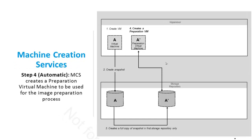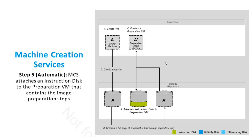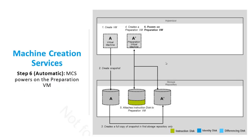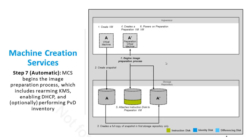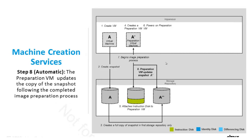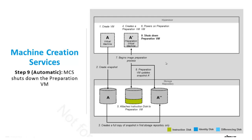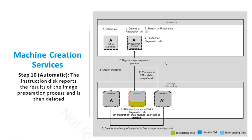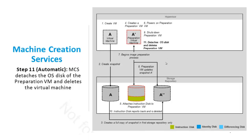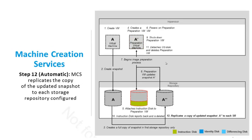Then the preparation VM is created, and an instruction disk is attached to it to create the VMs as per our requirement. The preparation VM is then powered on. It copies the snapshot from the storage repository to begin the image preparation. Once image preparation is done, the preparation VM is shut down. The instruction disk is then deleted, and from the preparation VM the OS disk is detached and deleted. Once the OS disk is detached, the preparation VM itself is deleted.